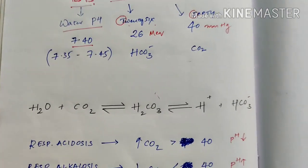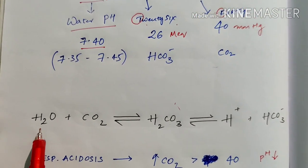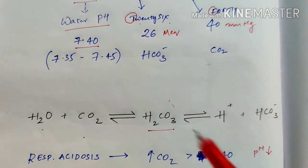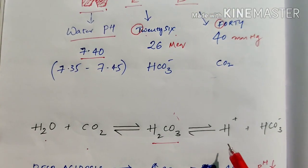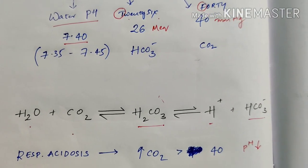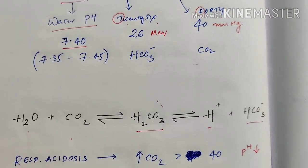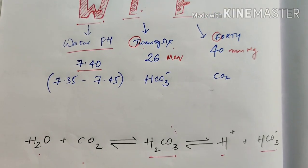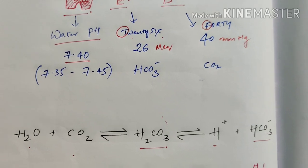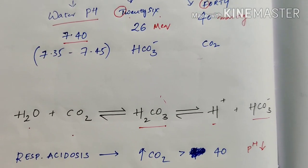The basic concept is simple chemistry you learned in 10th standard: CO2 binds with H2O to form H2CO3, which then splits into H plus and HCO3 minus. This is a reversible equation — it can go in either direction.